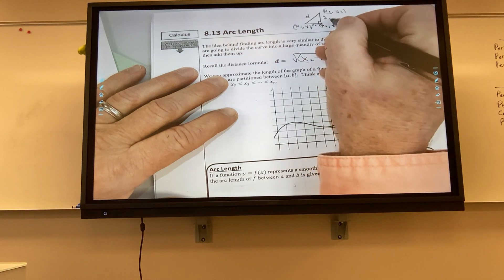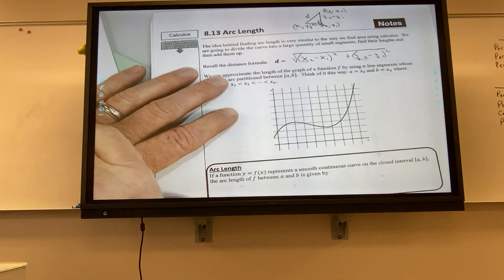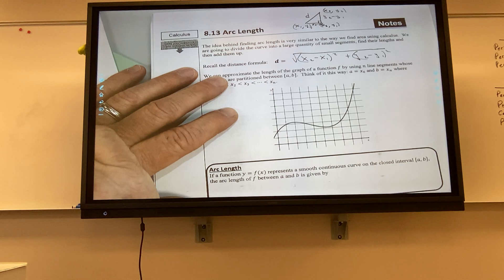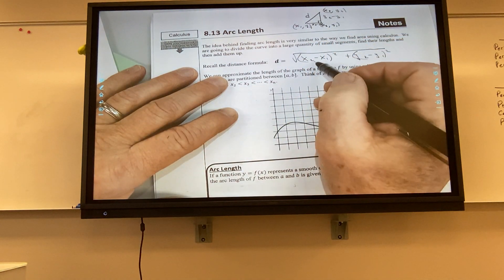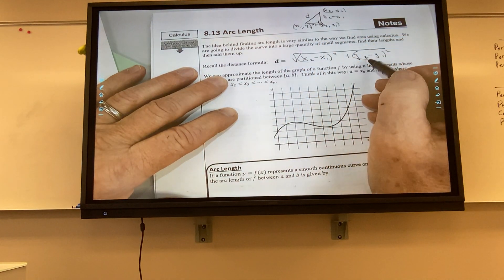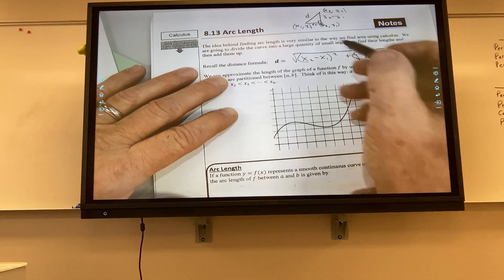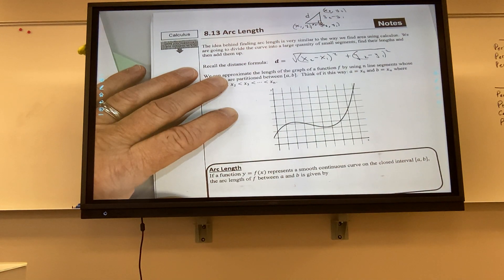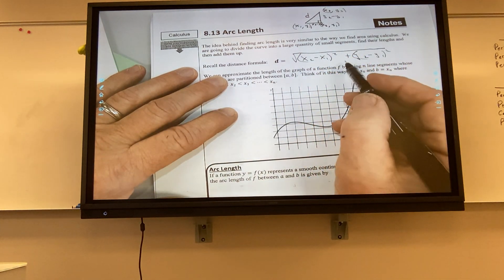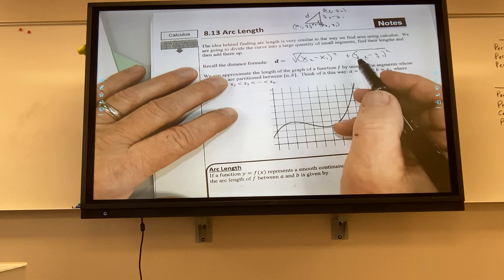And this would be y2 minus y1. And so if you square the x distance and square the y distance and take the square root of it, you get that diagonal, correct? Is that kind of the same? So I always just, if I know the Pythagorean theorem, I know a lot of math.